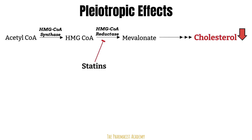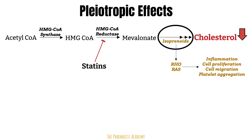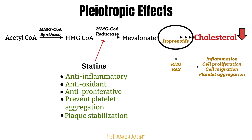After inhibiting HMG-CoA reductase, mevalonate will decrease, causing a cascade of reductions until we finally get to cholesterol. One group of notable compounds inhibited due to HMG-CoA reductase inhibition are known as isoprenoids, which are responsible for activating some intracellular signaling proteins. Examples include RHO and RAS, which in normal circumstances promote inflammation, cell proliferation, and cell migration — all of which add to the progression of atherosclerosis and other vascular disorders. So because the production of RHO and RAS are also inhibited by statins, they have effects beyond cholesterol reduction. Studies have shown that statins decrease plaque volume independent of LDL cholesterol reduction. This pleiotropic effect is a class effect demonstrated by all statins.